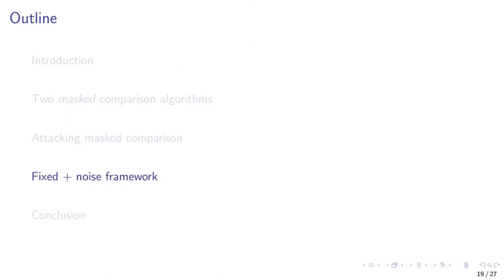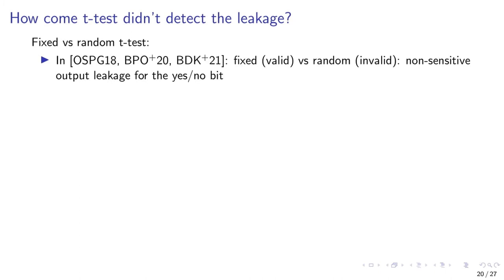In our work, we find side-channel vulnerabilities in two masked comparison algorithms. To prevent such issues from happening in the future, we propose a new framework which we call fixed plus noise. An important question to ask is why the standard t-test did not detect the leakage we saw previously. The typical scenario is to conduct a fixed versus random t-test, where often the fixed ciphertext will be a valid ciphertext output of the encapsulation, and the random ciphertext is chosen completely random. One of the problems with this approach is that the fixed ciphertext will be a valid ciphertext whereas the random ciphertext will be an invalid ciphertext, resulting in output leakage of the yes or no bit that is the output of the FO transform — but as we previously mentioned, this output bit is non-sensitive.